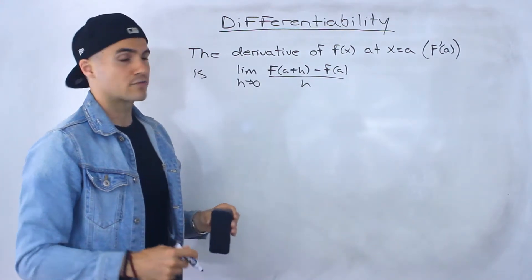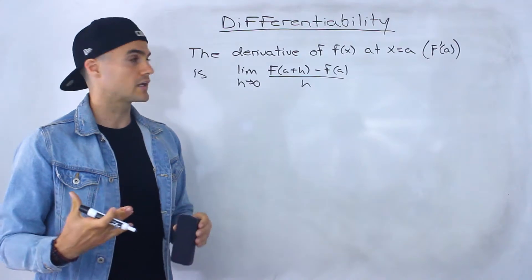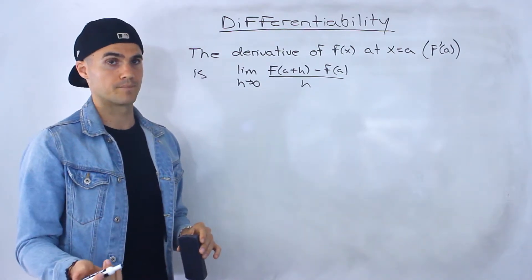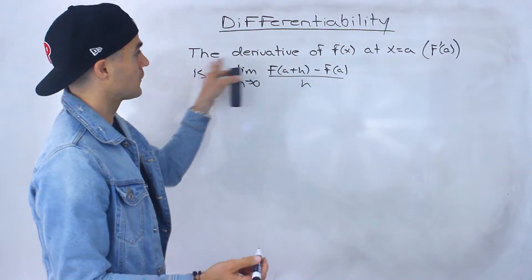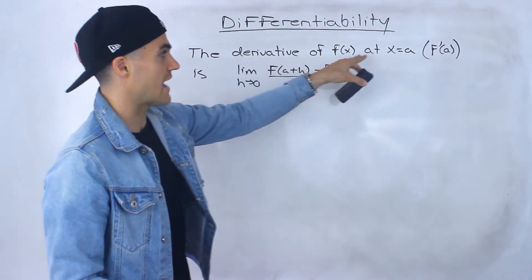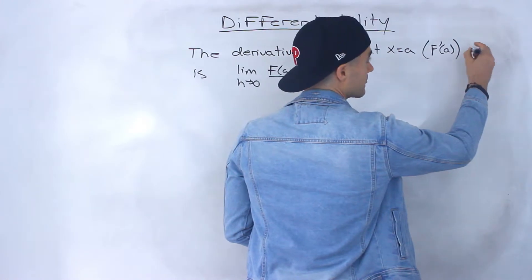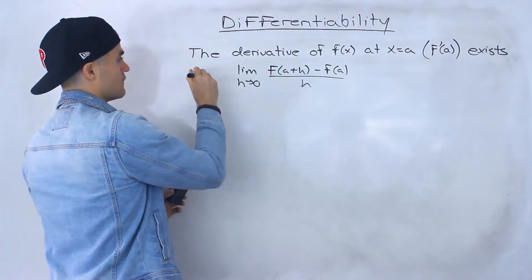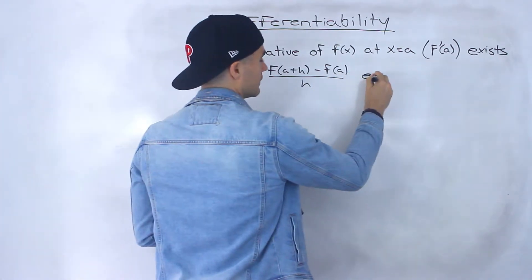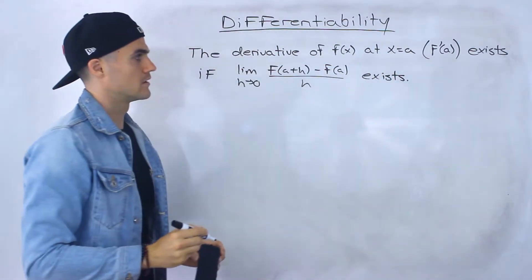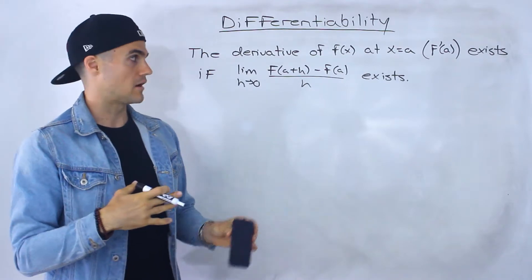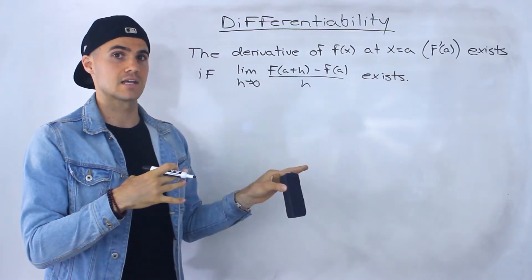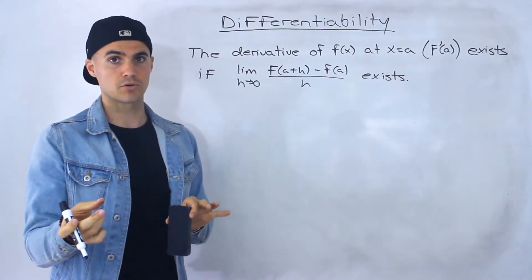So when we talk about differentiability, what we're going to be looking at is whether the derivative of a function at a specific x value exists or not. For differentiability, we can rewrite this as: the derivative of f of x at an x value of a, or f prime of a, exists. To check if a function is differentiable at a certain x value, all we have to do is check if this limit exists. And if it doesn't exist, then it means the function isn't differentiable at that point.